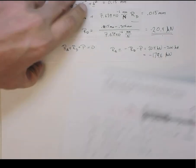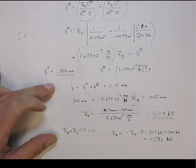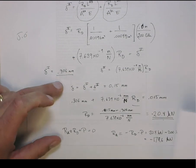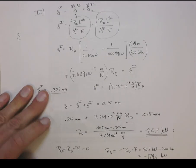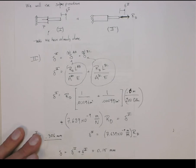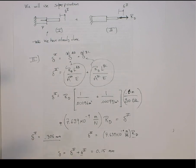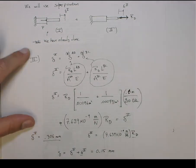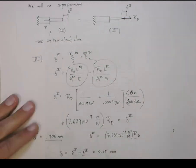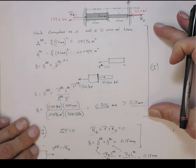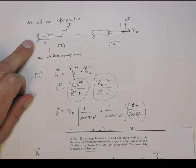So those are the two approaches: you could do the direct approach, where you have the sum of forces and the compatibility equation directly, or you could do superposition. As I mentioned, I like the direct approach, but superposition worked well here because by checking whether it elongated at least the gap of 0.15 millimeters, that check actually becomes the first load case for the superposition approach — so we killed two birds with one stone.